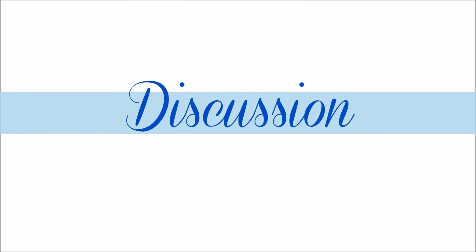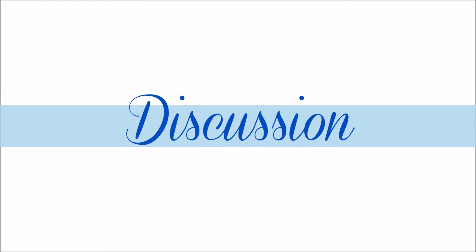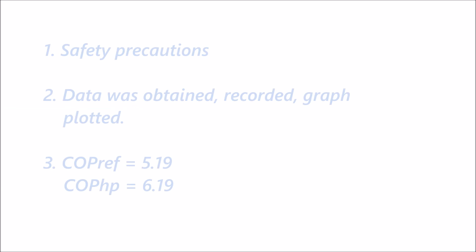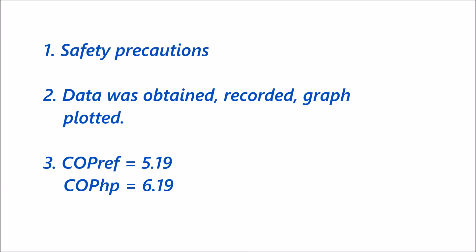Now, we'll move into the discussion. First, the experimental procedures are carried out with safety precautions. Lab coats were worn to prevent any hot substances from coming into contact with the skin, and stopwatches were used to measure time to increase the accuracy. Next, the data obtained was recorded in a table, and then a graph of pressure against enthalpy was plotted using the data from the table.